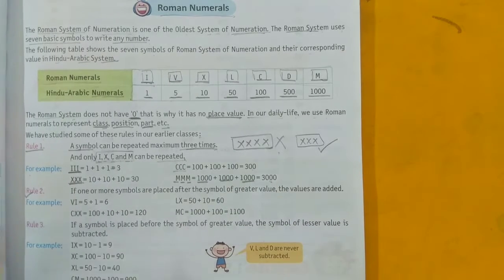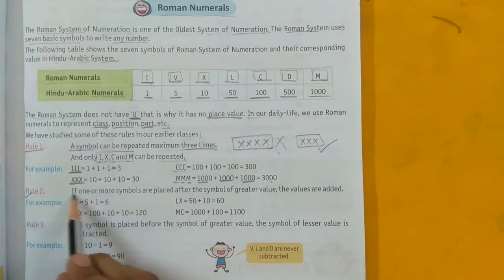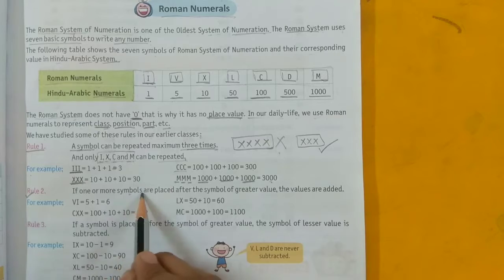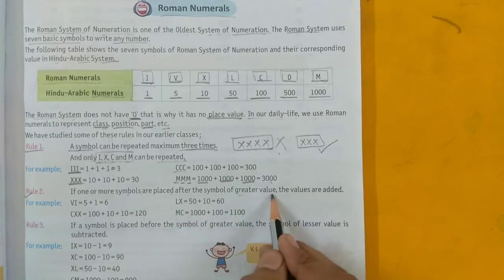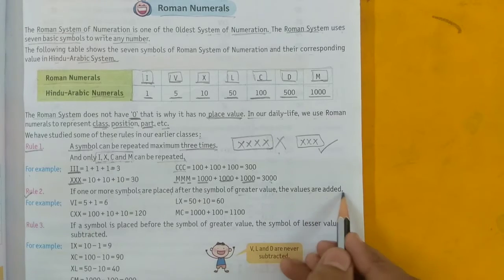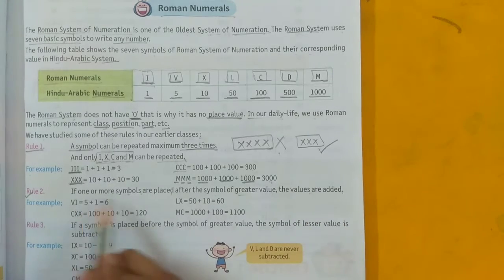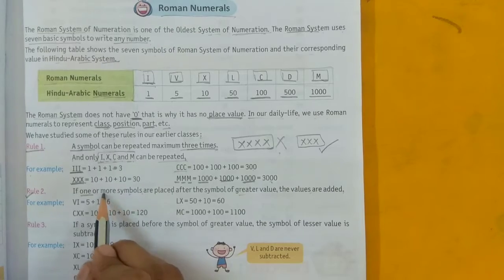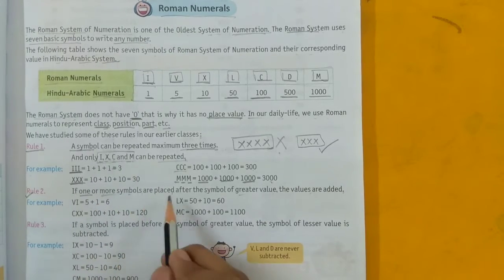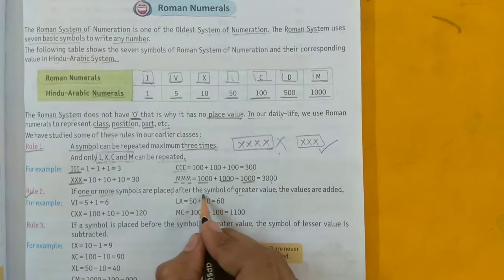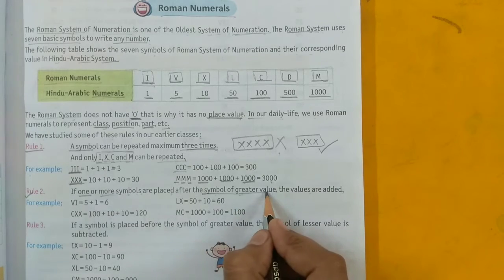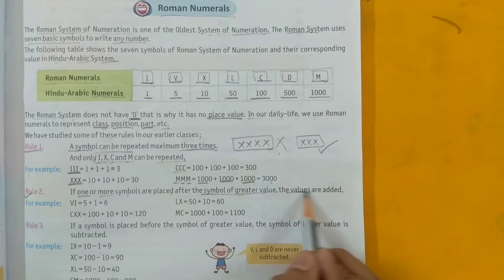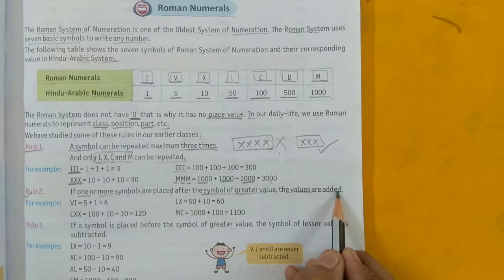Rule 2: If one or more symbols are placed after the symbol of greater value, the values are added. Agar ek ya ek se zyada symbol placed kiya jaata hai greater symbol value ke baad, to wo jo value hai wo add ki jaati hai.